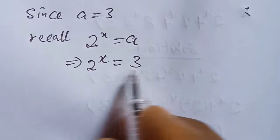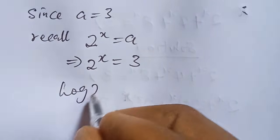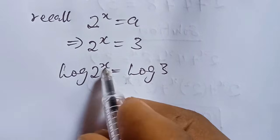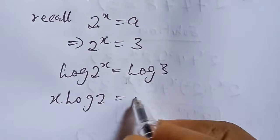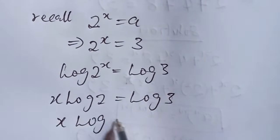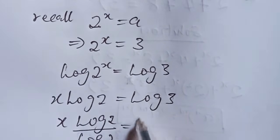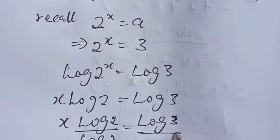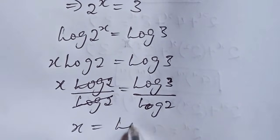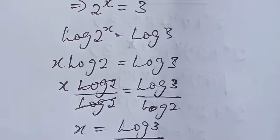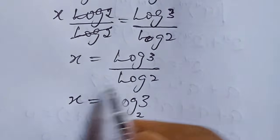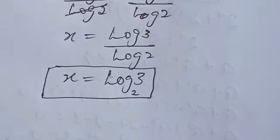So we take the log of both sides of the expression. We bring down the exponent, then divide both sides by log 2. Simplifying this, we arrive at our value of x, which is log(3) divided by log(2).